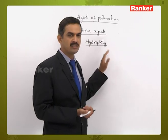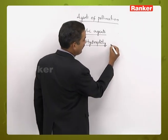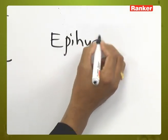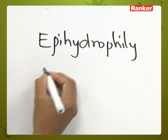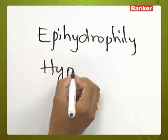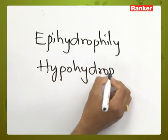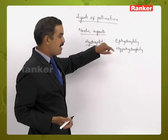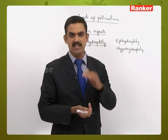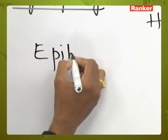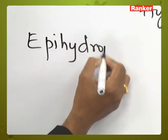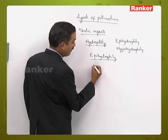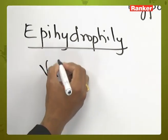In hydrophily, two types are present based on whether pollination occurs on the upper surface or inside the water. The first type is epi-hydrophily, where pollination takes place on the upper surface of the water. Epi-hydrophily is exhibited by freshwater plants like Vallisneria and Hydrilla.